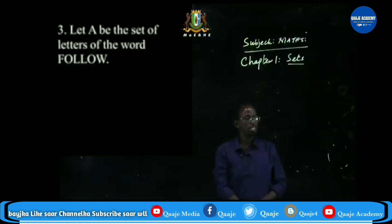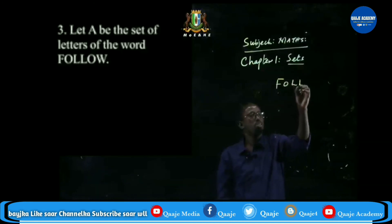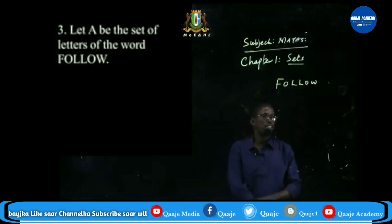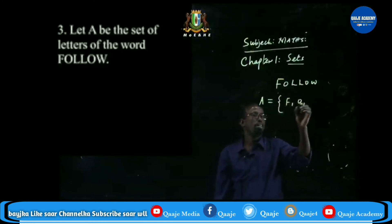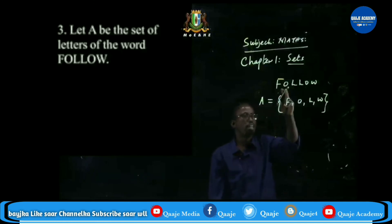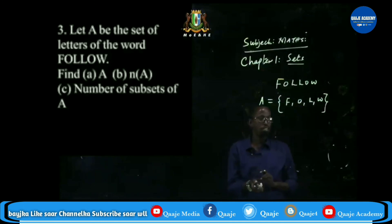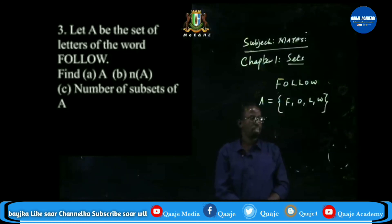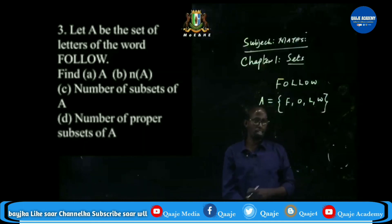Example: let A be the set of letters of the word 'Follow'. The word Follow has repeated letters, so the set becomes A = {F, O, L, W} — we remove letters that repeat, because elements should not be repeated.